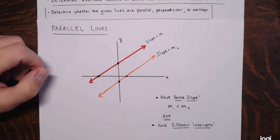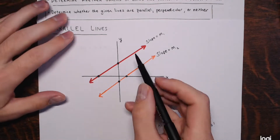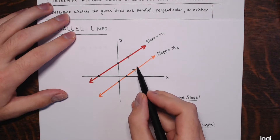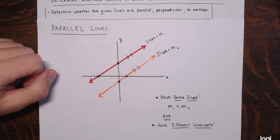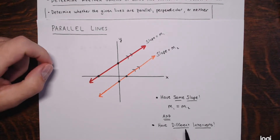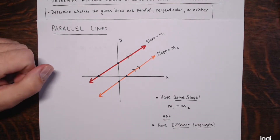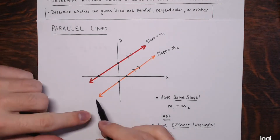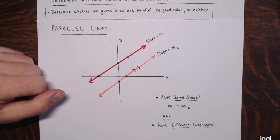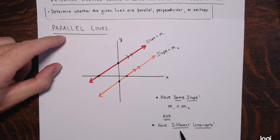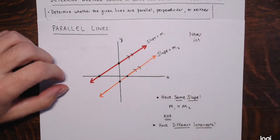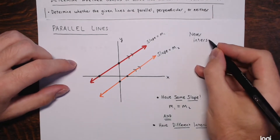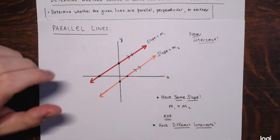That's what it means for lines to be parallel. If two lines are parallel, you might also see little arrow marks on them from a geometry text to indicate they are parallel to one another. They have to have different intercepts because if they had the same slope and the same intercepts, they'd just be the same line — they'd overlap everywhere, so they wouldn't be considered parallel. They have to have the same slope and different intercepts so they never touch, never intersect.